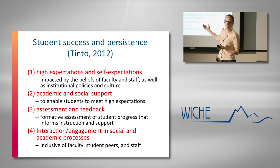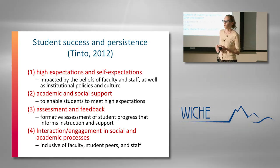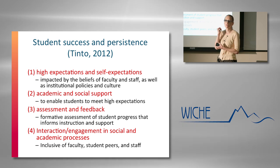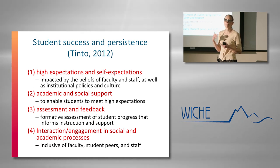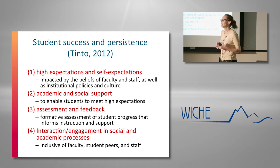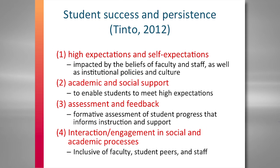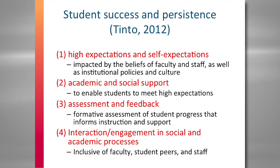Vincent Tinto's work — over 30 years in two-year and four-year colleges — has created one of the most lasting models of what institutional and student-level factors create conditions that help students stay and not leave before completing a degree. In his 2012 book Completing College, he flipped the question to ask: what does an institution need to do to help students stay?